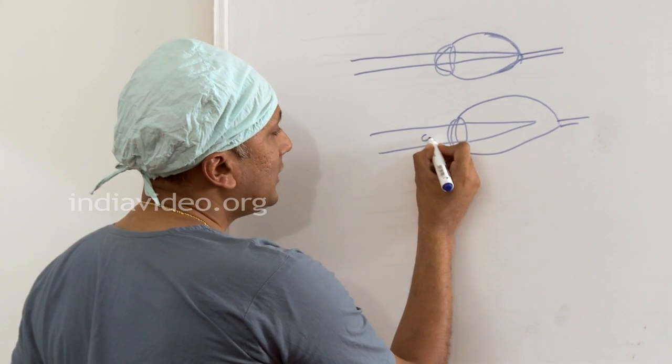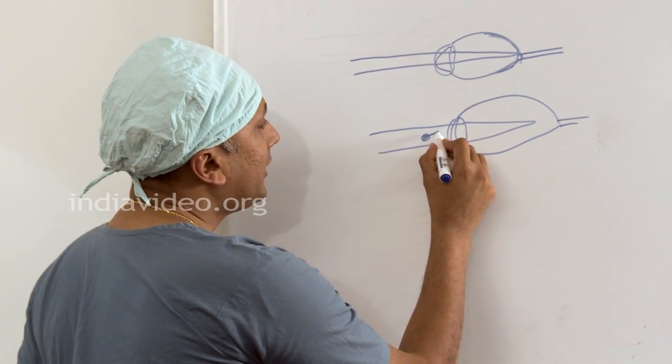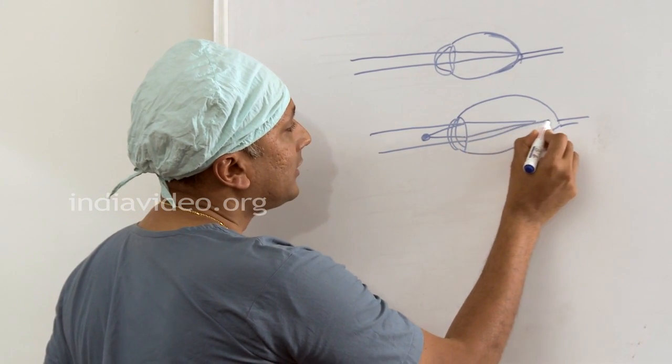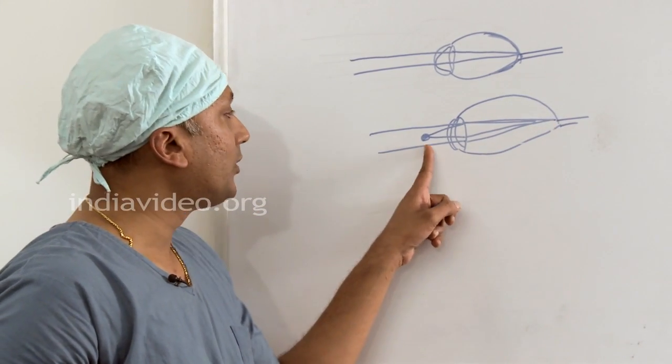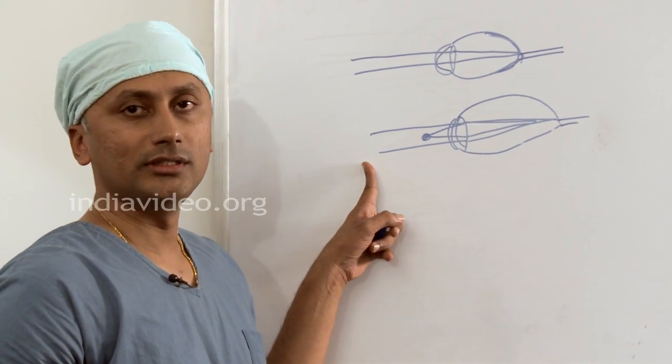But on the other hand, if you see a near object, a light ray coming from the near object is divergent and the light is focused to a fine point on the retina. So a near object can be seen very well and a distant object cannot be seen very well. That is why it is called short sight.